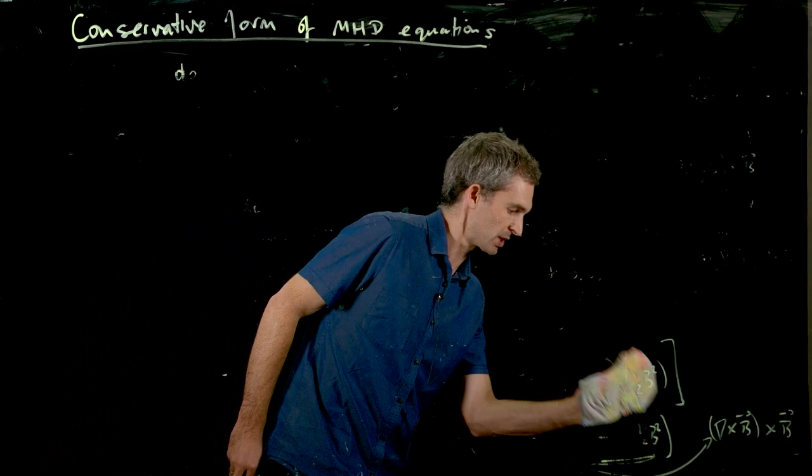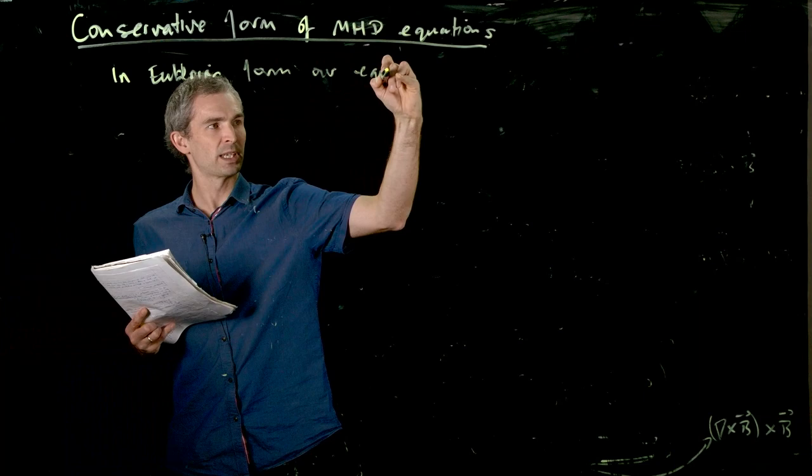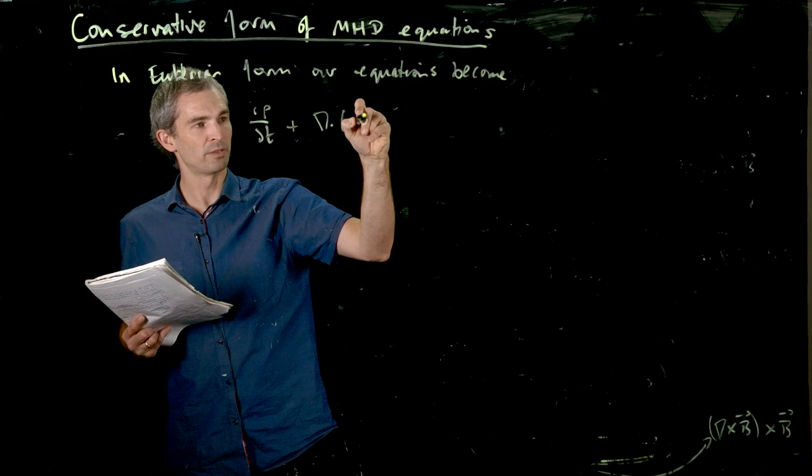And again, you can do this on your problem sheet. But in Eulerian form, our equation has become, and I'll use a quasi kind of vector notation. So we've got a d rho dt, plus div rho v, equals zero.